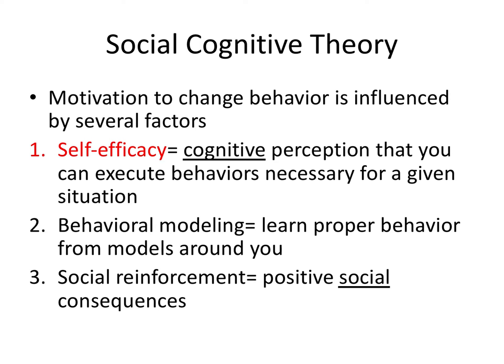Next we have social cognitive theory, another model to study behavior change, and there are three important tenets. Self-efficacy is the main tenet, and it refers to the cognitive perception that you can execute behaviors necessary for a given situation.